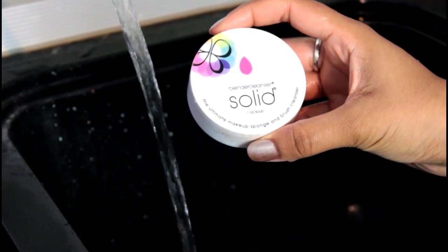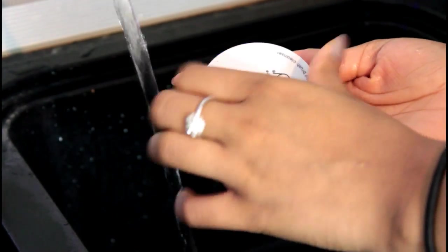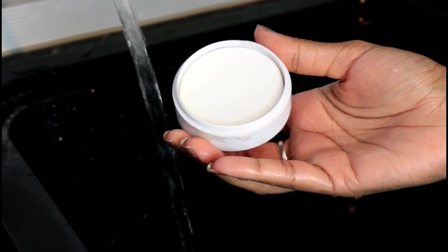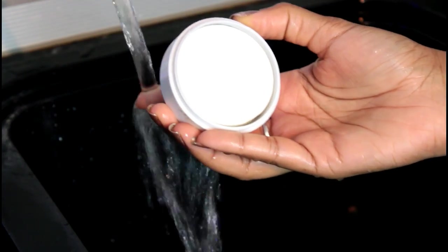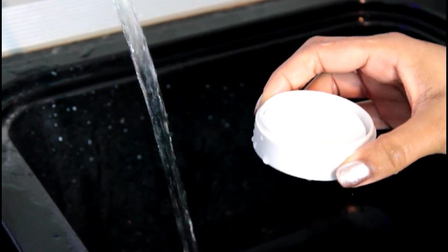The first thing that I like to grab is the Beauty Blender Solid Soap. It's kind of on the pricey side, obviously, because it's Beauty Blender. I think I got this for around £12 on Amazon. I did try the sample first and I absolutely loved it, so I had to just get the actual one.